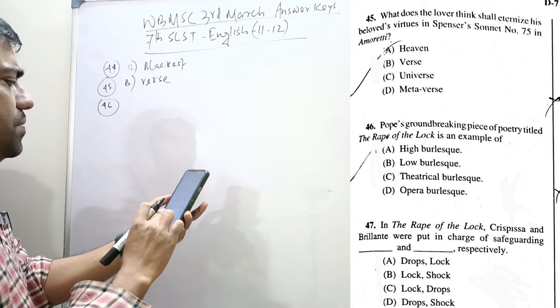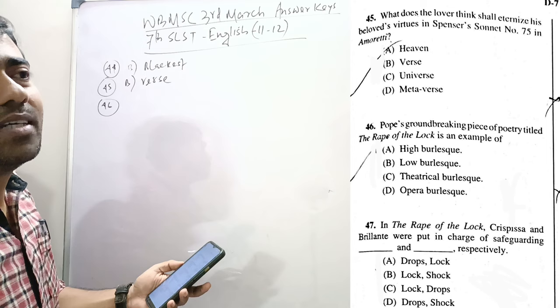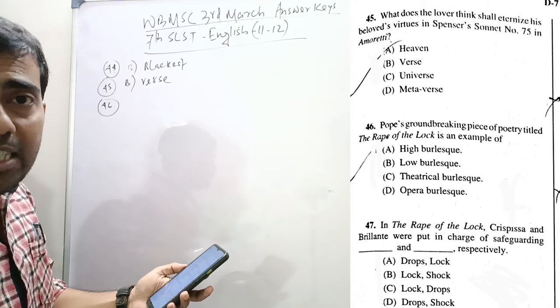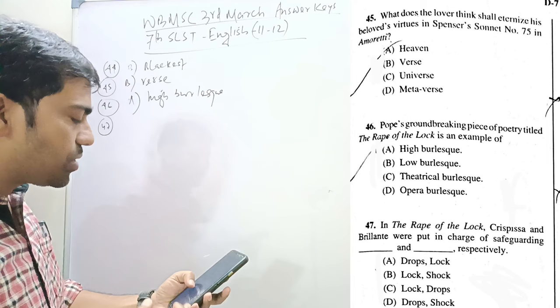Pope's groundbreaking piece of poetry titled The Rape of the Lock is an example of - yes, it is a classic example. The Pope's The Rape of the Lock is a classic example of Mock Heroic poem. So, Mock Heroic is equal to High Burlesque. It was to make mockery upon the contemporary situation, contemporary time through portraying characters.